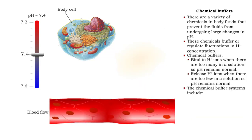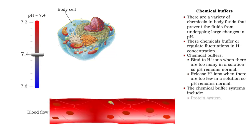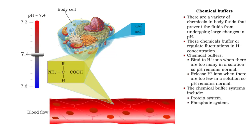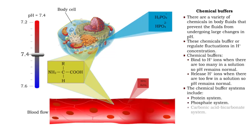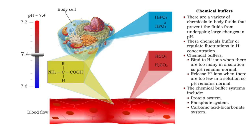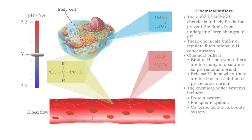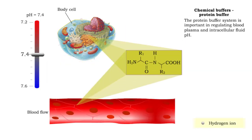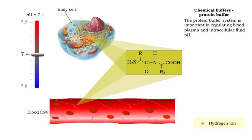There are three chemical buffer systems. They include proteins, phosphates, and carbonic acid bicarbonates. The protein buffer system is important in regulating blood plasma and intracellular fluid pH.